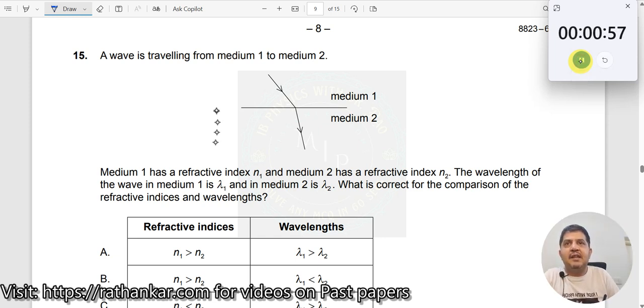Question number 15. A wave is traveling from medium 1 to medium 2. Now let us draw the normal first to understand what kind of medium they are.